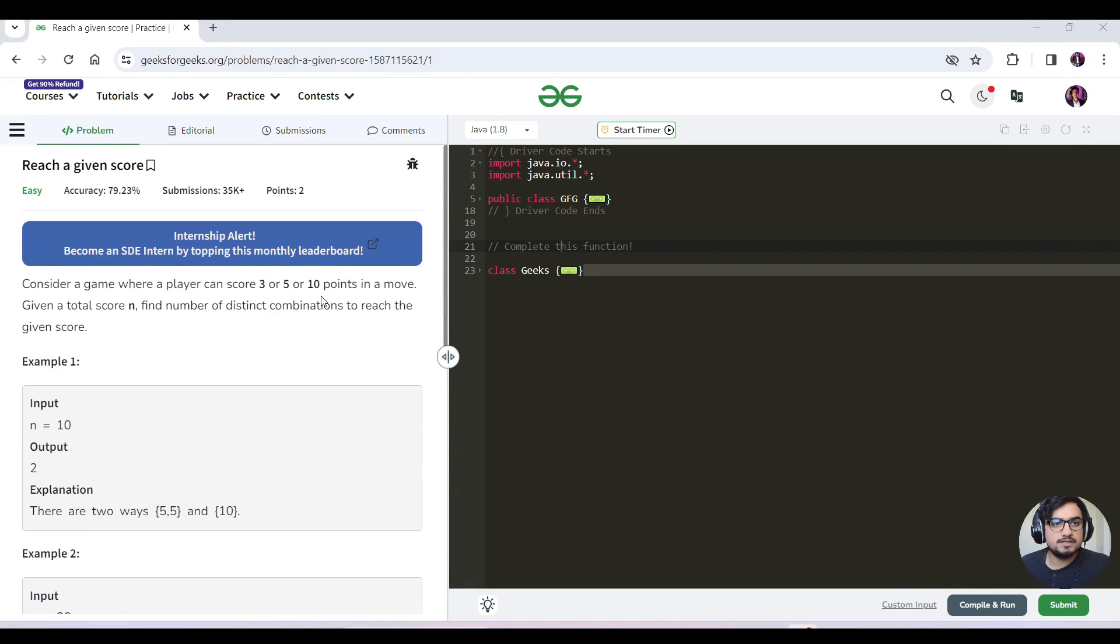Okay, so hello everyone, this is Akshay here. Let's continue with today's GFGP. Today's question name is Reach a Given Score. So what is this question? We have been given a game where the player can score 3, 5, or 10 points. So there are only three particular points a player can score in a move. Given a total score n, find the number of distinct combinations to reach the given score.